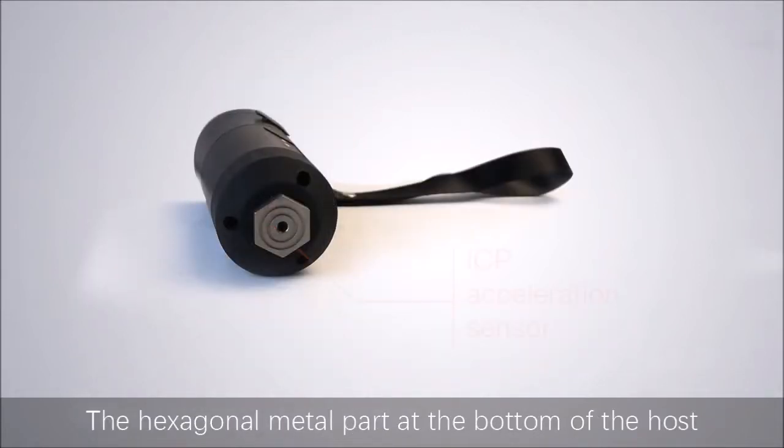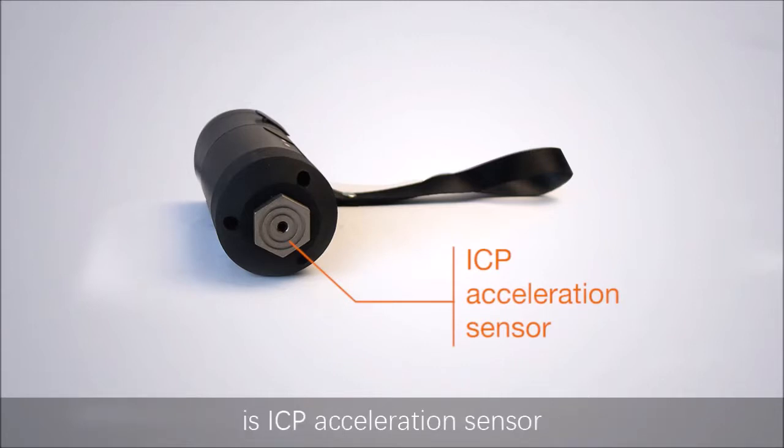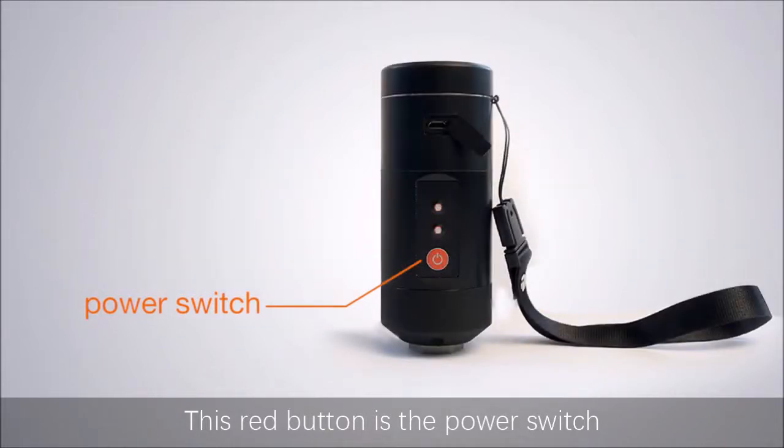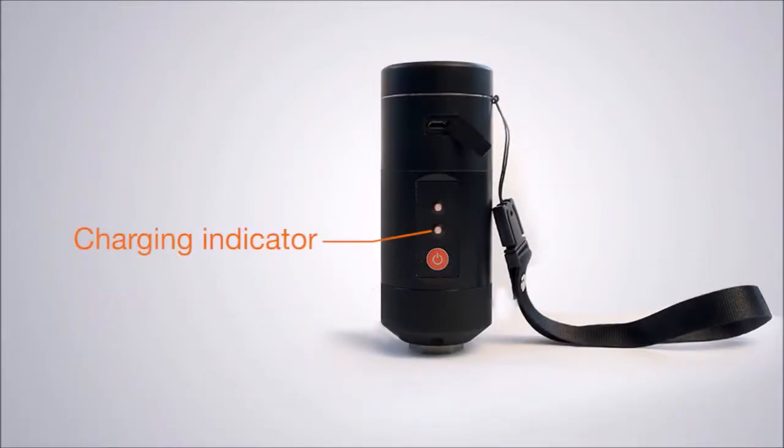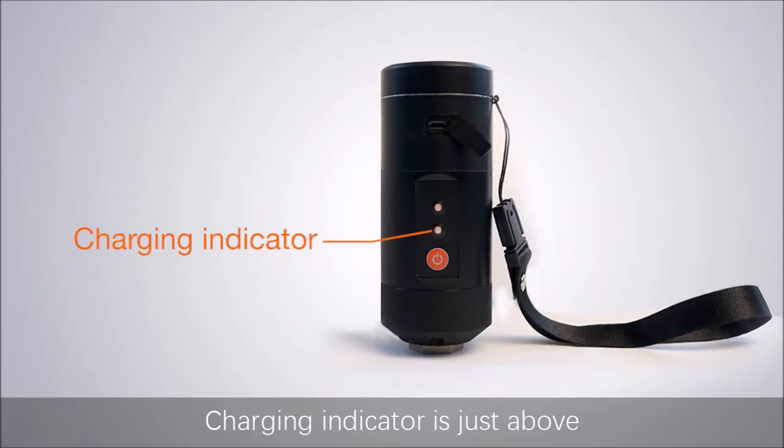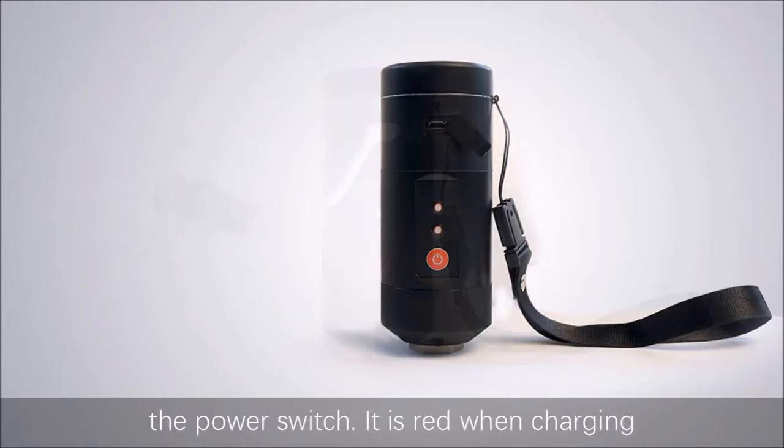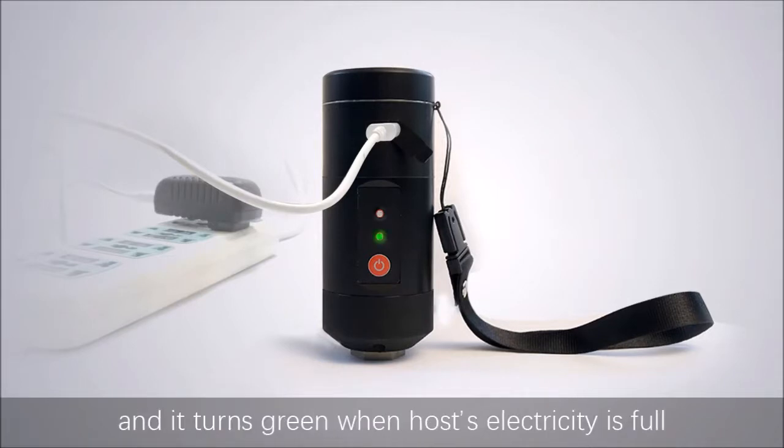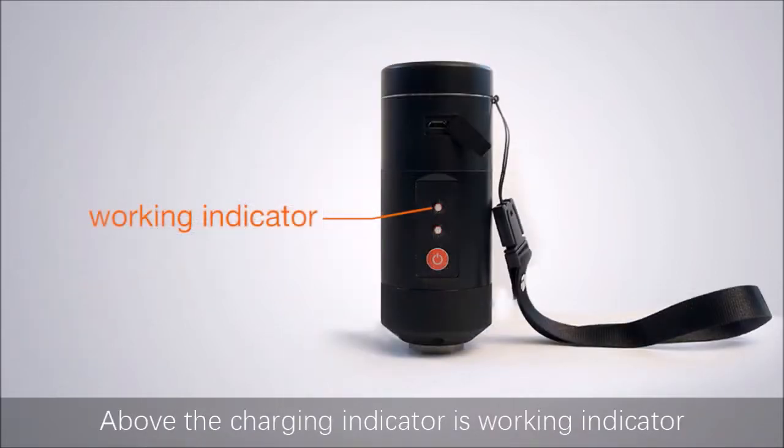The hexagonal metal part at the bottom of the host is the ICP acceleration sensor. This red button is the power switch. The charging indicator is just above the power switch.